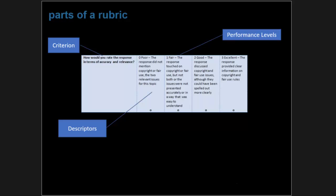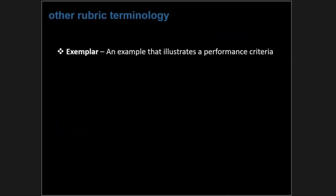The way a grader determines if students have provided the necessary evidence is through descriptors — the language that describes what you're looking for to place a student into one of the performance levels based on the criteria. Another piece of rubric terminology: an exemplar is an example that illustrates performance criteria. Going back to the AP example, professors scoring the AP are given exemplars — example essays that reflect what constitutes a one, two, three, four, or five.